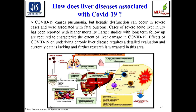COVID-19 causes pneumonia, but hepatic dysfunction can also occur in severe cases and has been associated with fatal outcomes. Cases of severe acute liver injury have been reported with higher mortality. Larger studies with long-term follow-up are required to characterize the extent of liver damage in COVID-19 patients, and the effects of COVID-19 on underlying chronic liver disease require detailed evaluation, as current datasets are lacking.